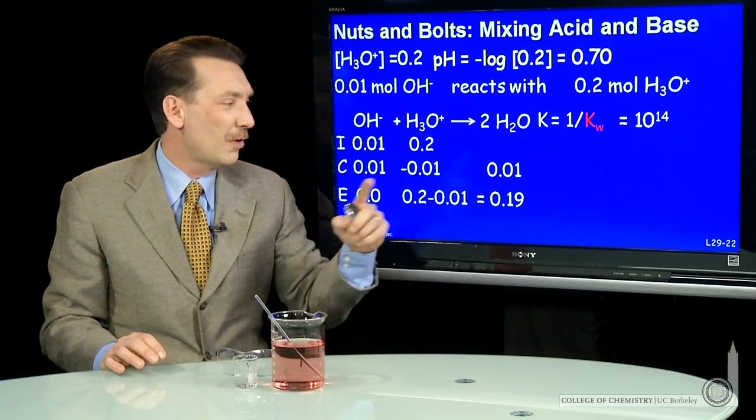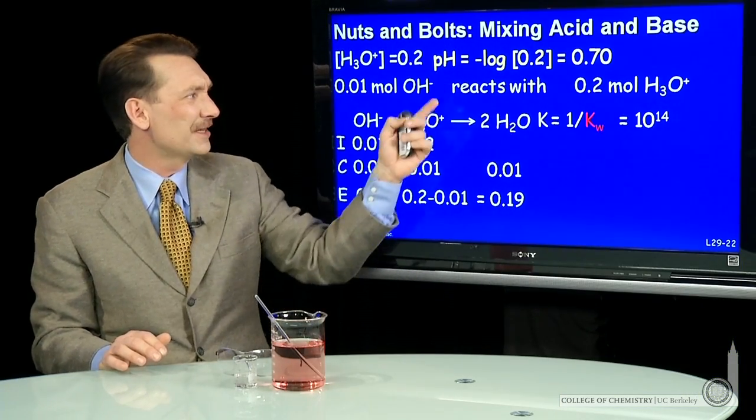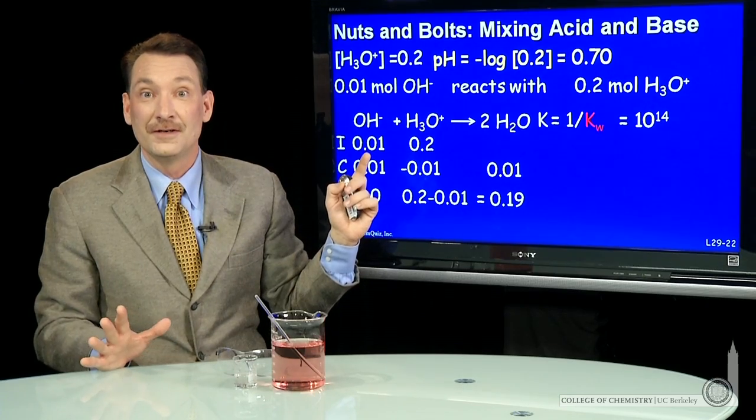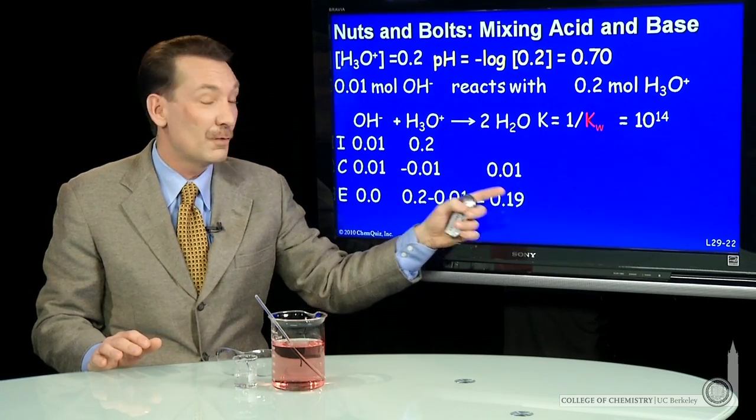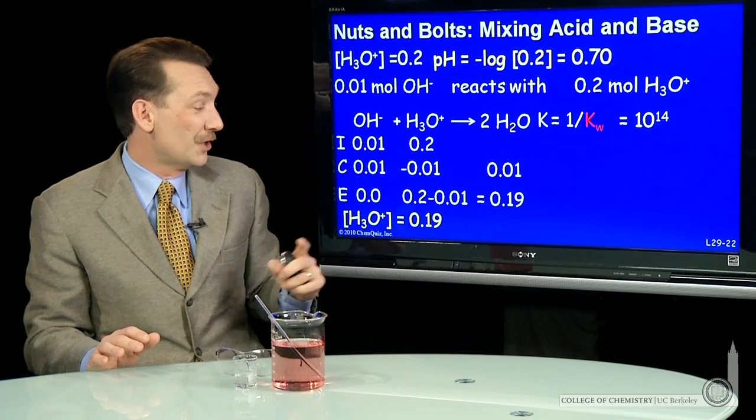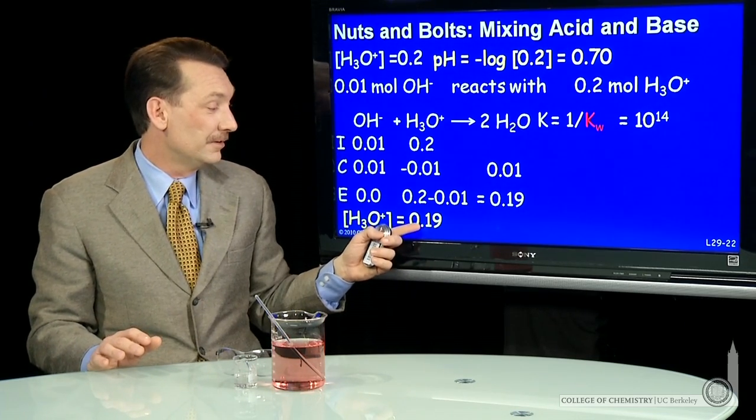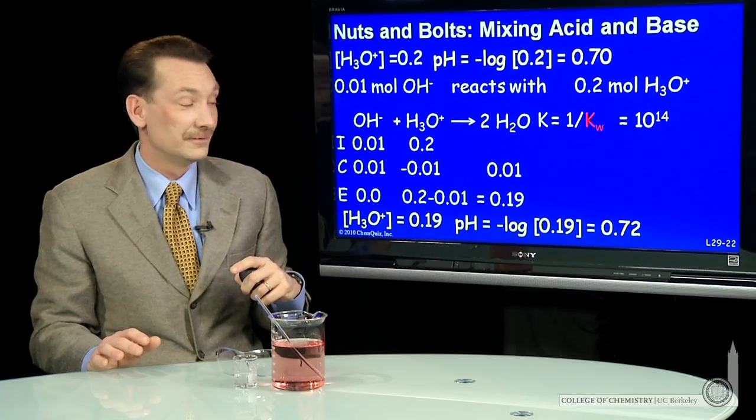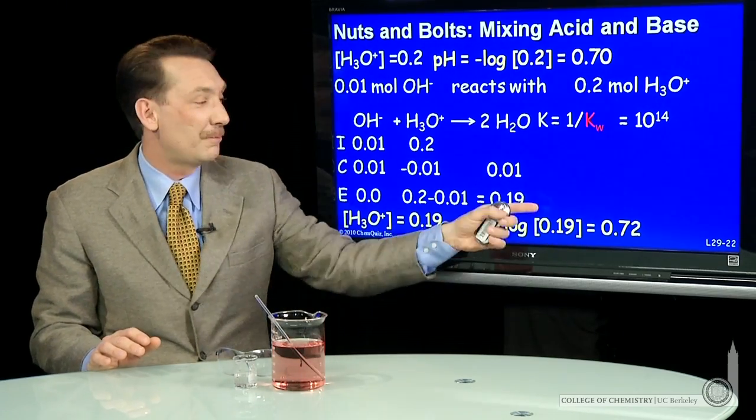And that 0.19 moles is in about a liter. It's in a liter plus the 10 mils of NaOH we added. So it's about 0.19 molar. So the H3O plus concentration now will be about 0.19 molar. Minus log of 0.19 molar is 0.72.